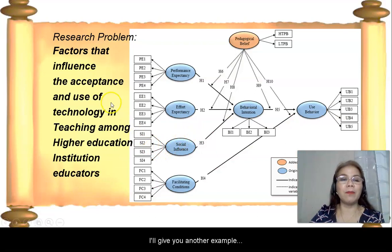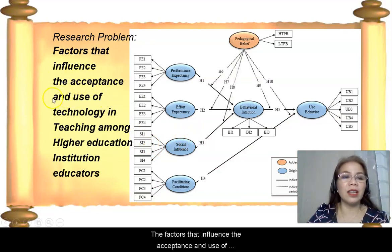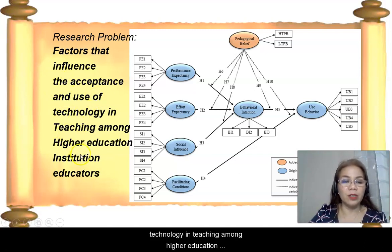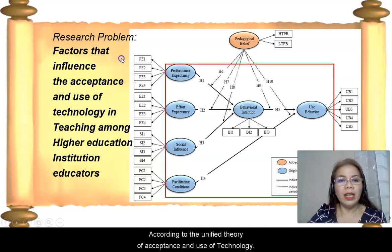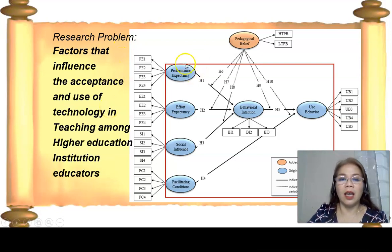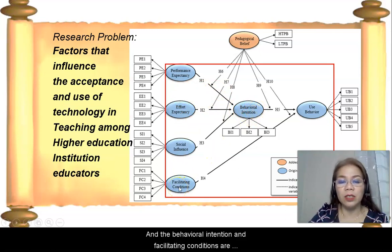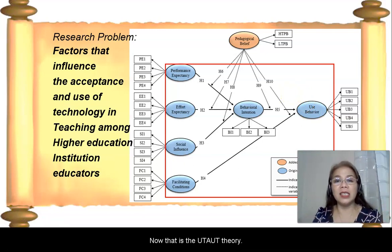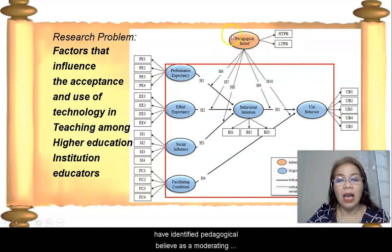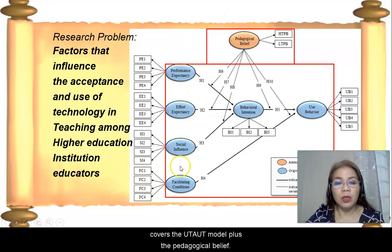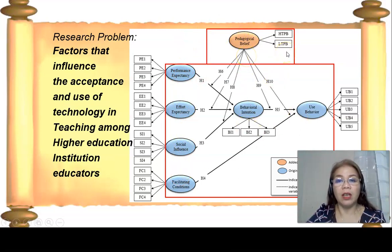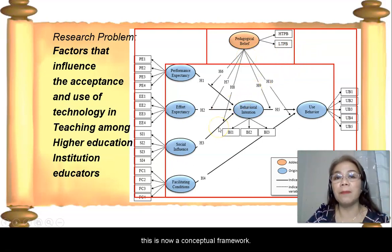Now, I'll give you another example. For example, the factors that influence the acceptance and use of technology in teaching among higher education institution educators. Now, according to the unified theory of acceptance and use of technology, performance expectancy, effort expectancy, and social influence are determinants of the behavioral intention. And the behavioral intention and facilitating conditions are determinants of a person's actual use of technology. However, in this study, the researchers have identified pedagogical belief as a moderating variable, and there is no theory that covers the UTAUT model plus the pedagogical belief. So, all in all, if you take this together, this is now a conceptual framework.